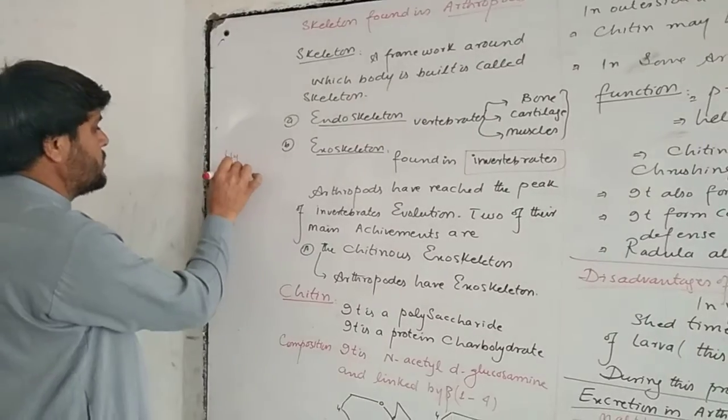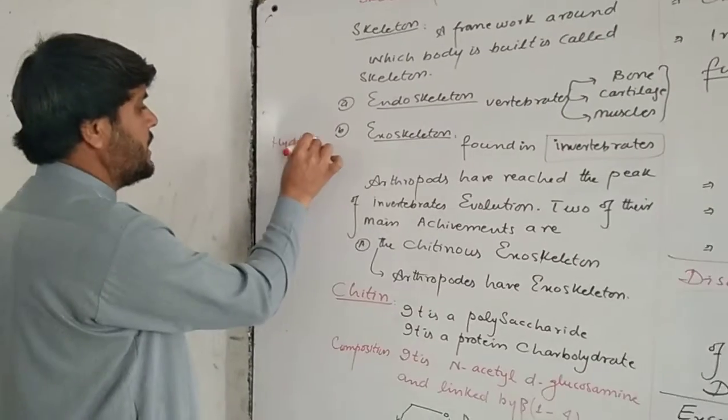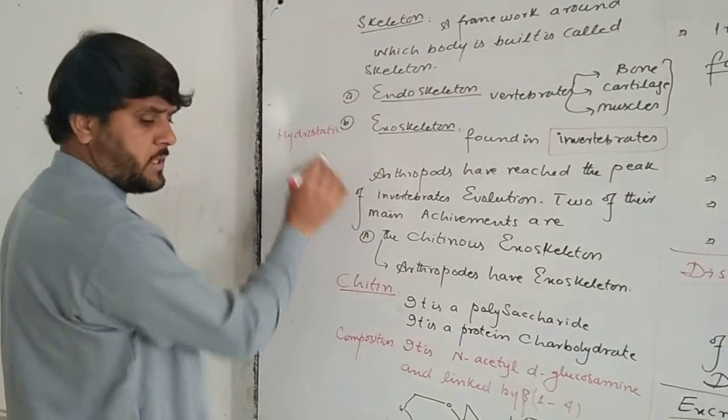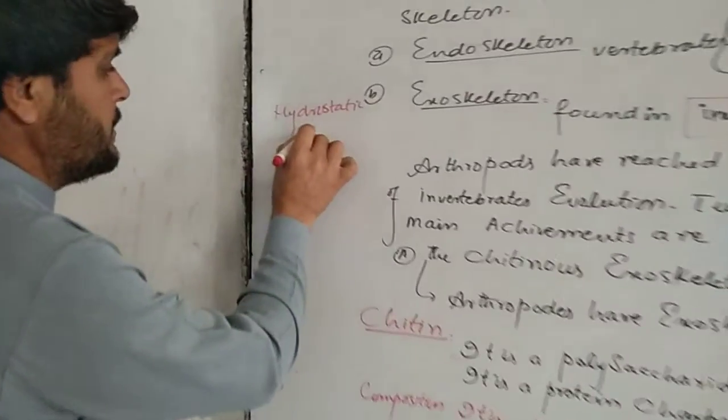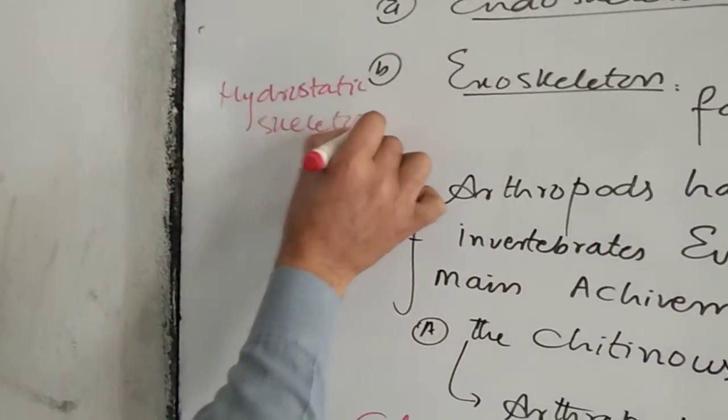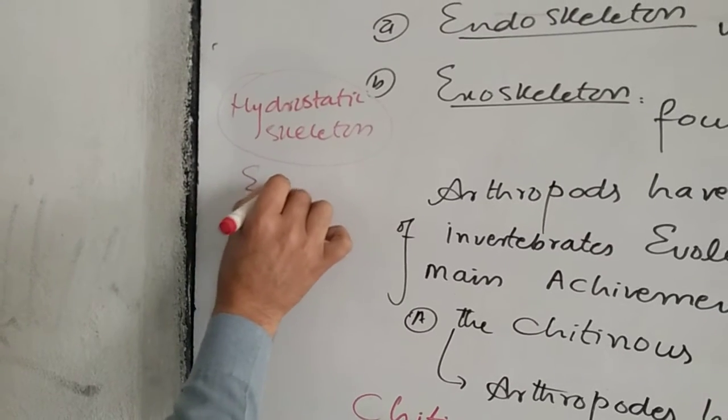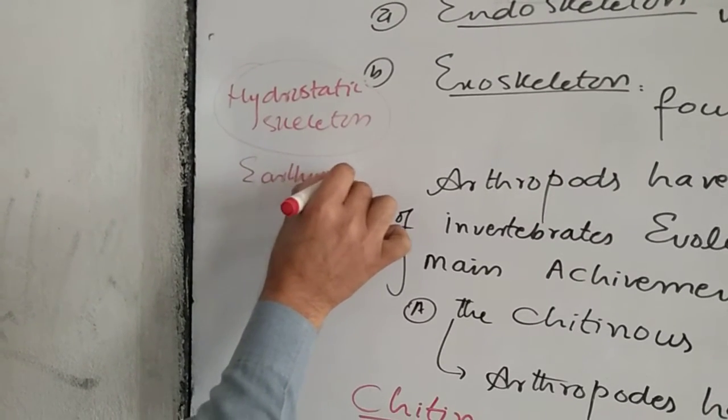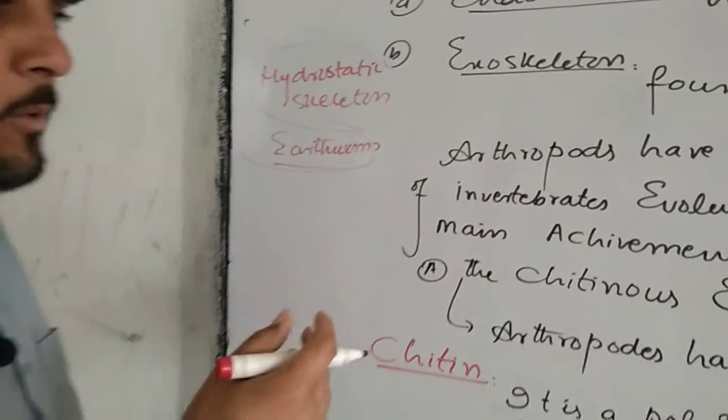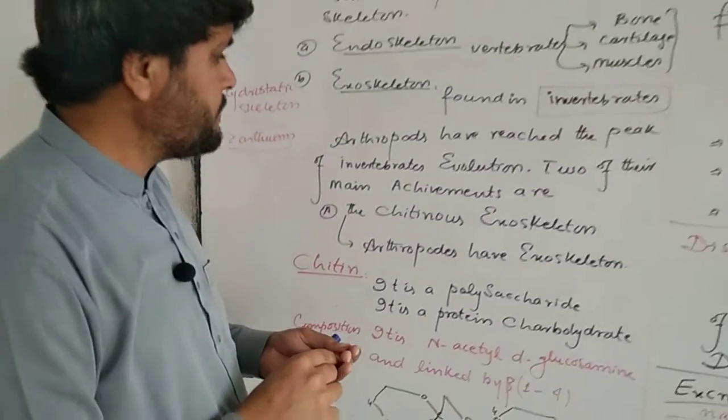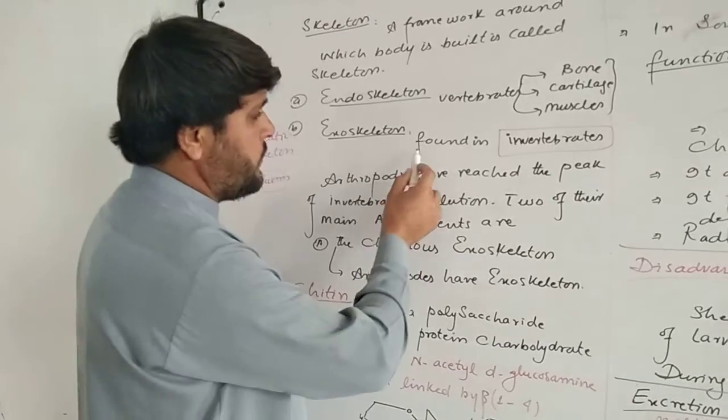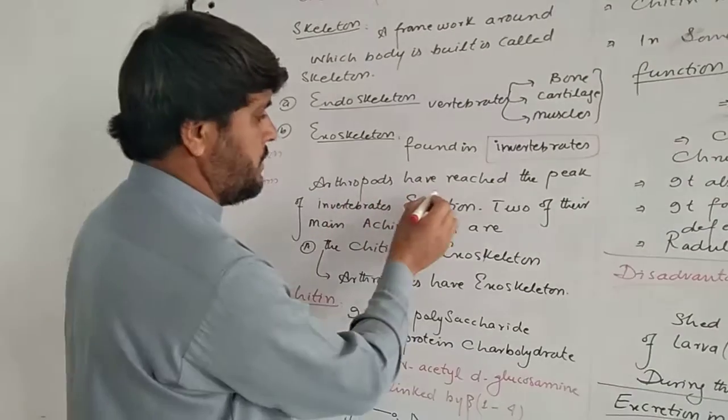Another type is hydrostatic skeleton. Point to be noted: this skeleton is found in invertebrates, especially in arthropods. This skeleton is present due to the presence of water in their body.